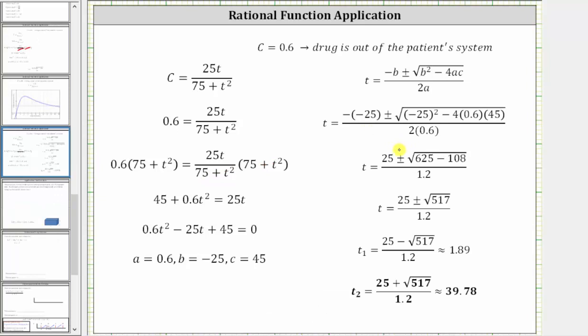After performing substitution into the quadratic formula, we have this line here. Simplifying, the opposite of negative 25 is positive 25. The square of negative 25 is 625. Four times 0.6 times 45 is 108, and two times 0.6 is 1.2.